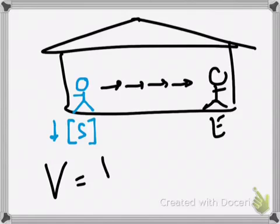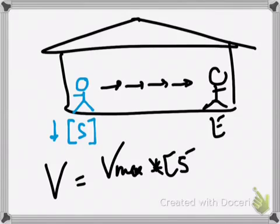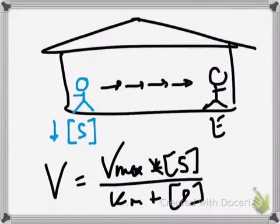V equals Vmax times S over Km plus S. If S is really low, what's going to happen? Well, compared to Km, if S is low, then Km is going to start dominating this equation. It's going to start exerting leverage on the Vmax.